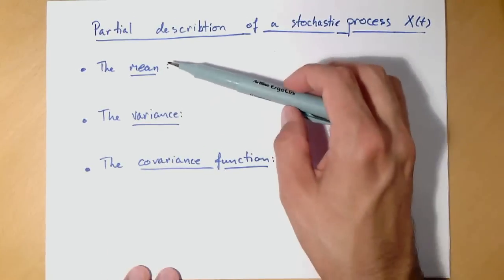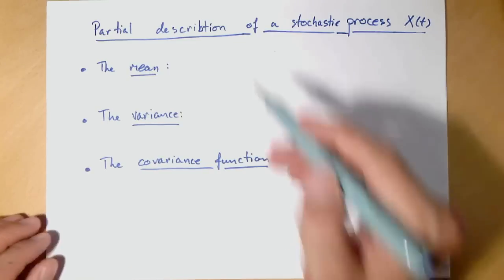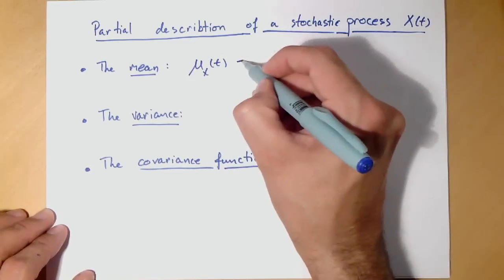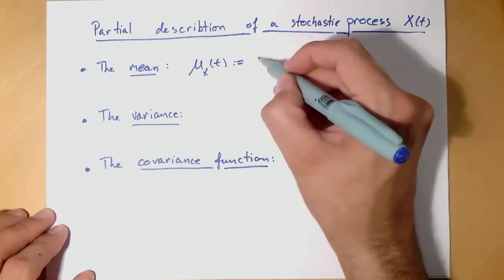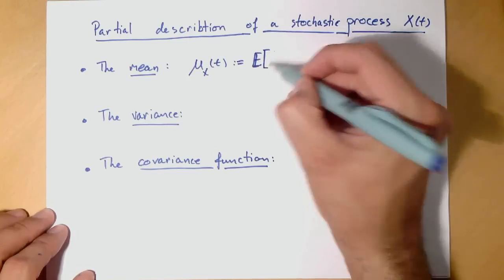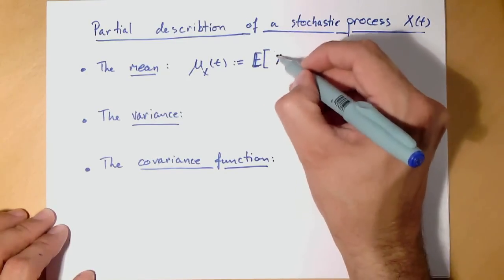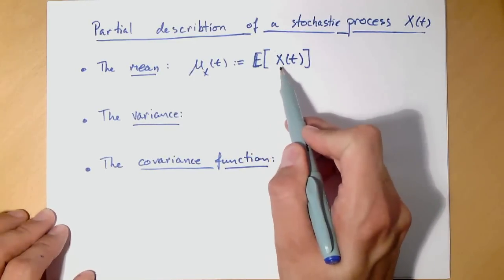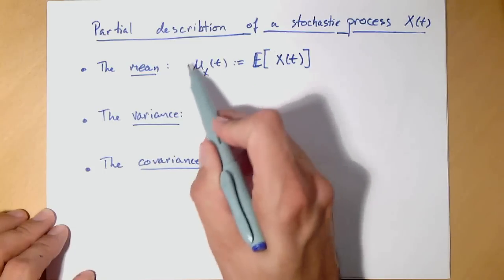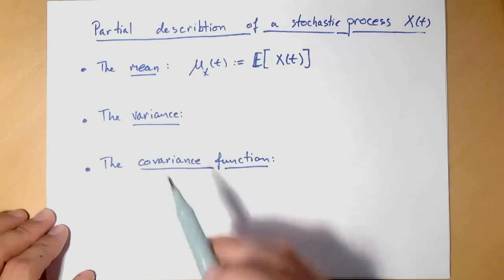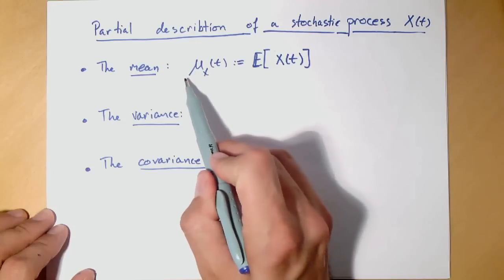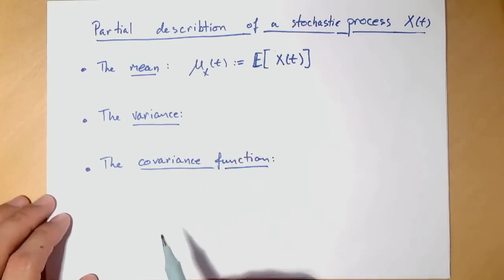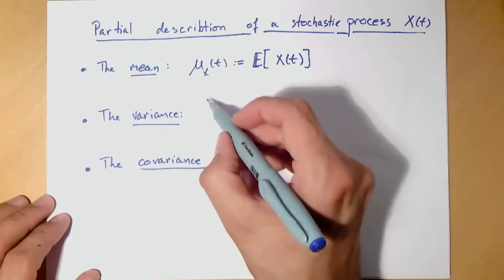That means to describe the mean, the variance, and the covariance function. So the mean would be defined as the notation μ_x(t), a function of time, which is to take the expectation of the process at any time. So for every time step, we take the expectation of the process, and that gives us a deterministic function μ_x(t). So you could try to describe the process by the mean. That would be a partial description.